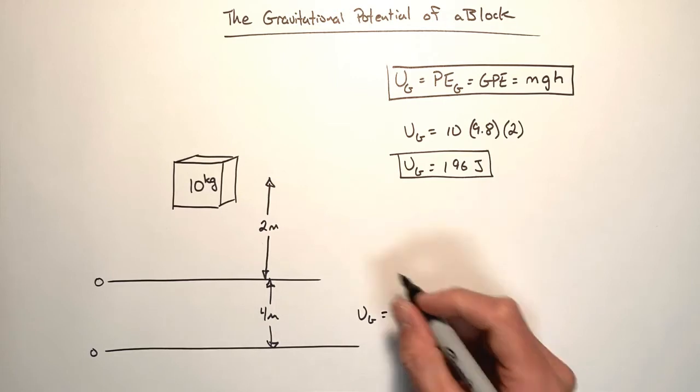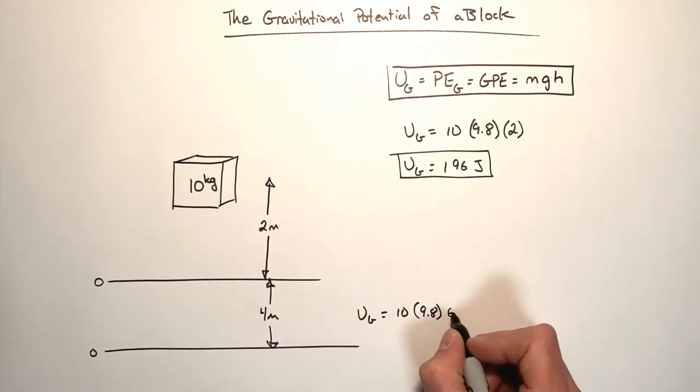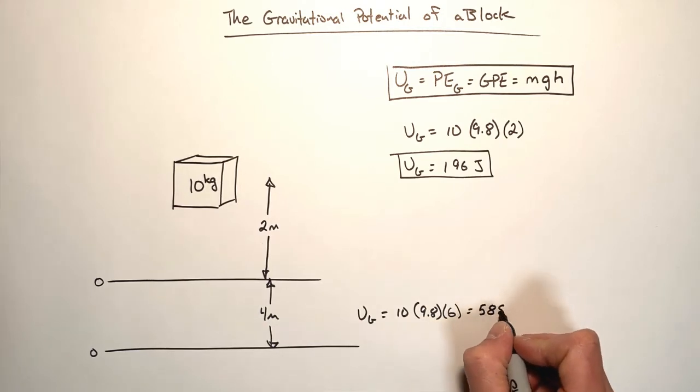So in this case, it'd be two plus four, that's six, which is going to give us a potential energy of 588 joules.